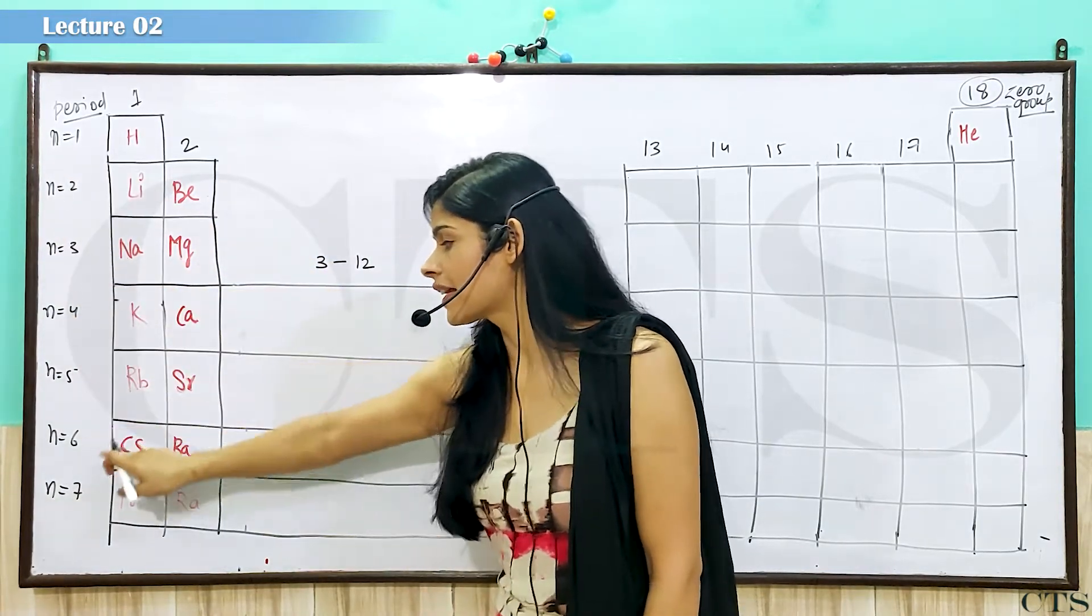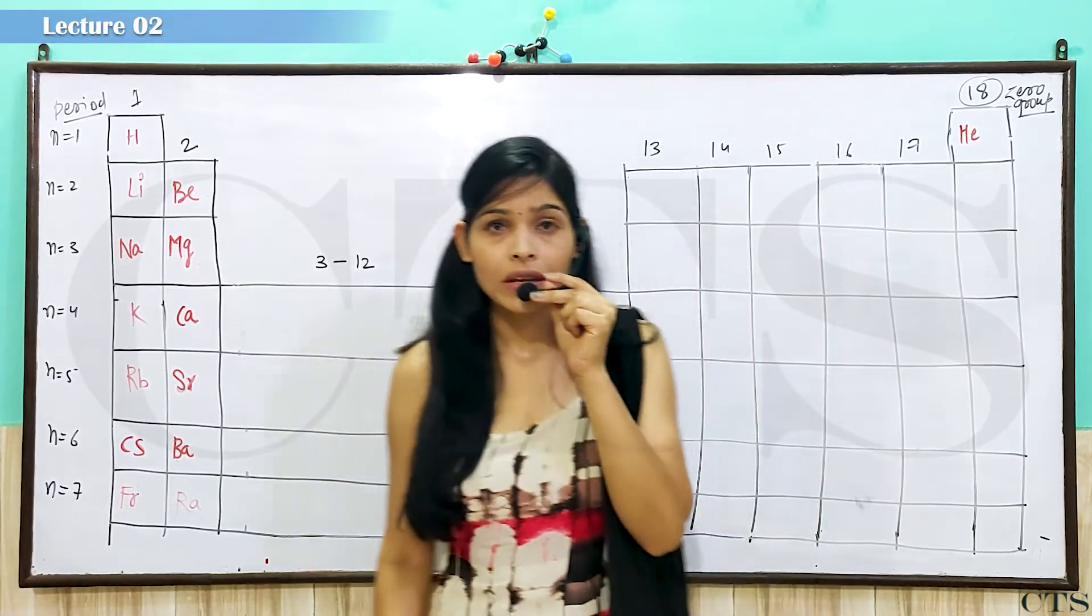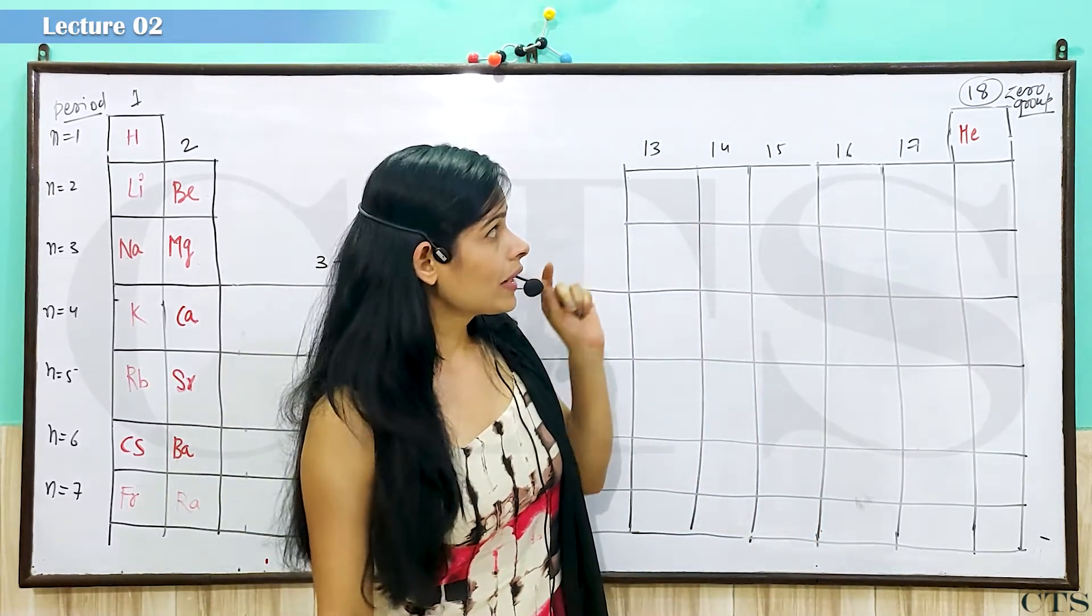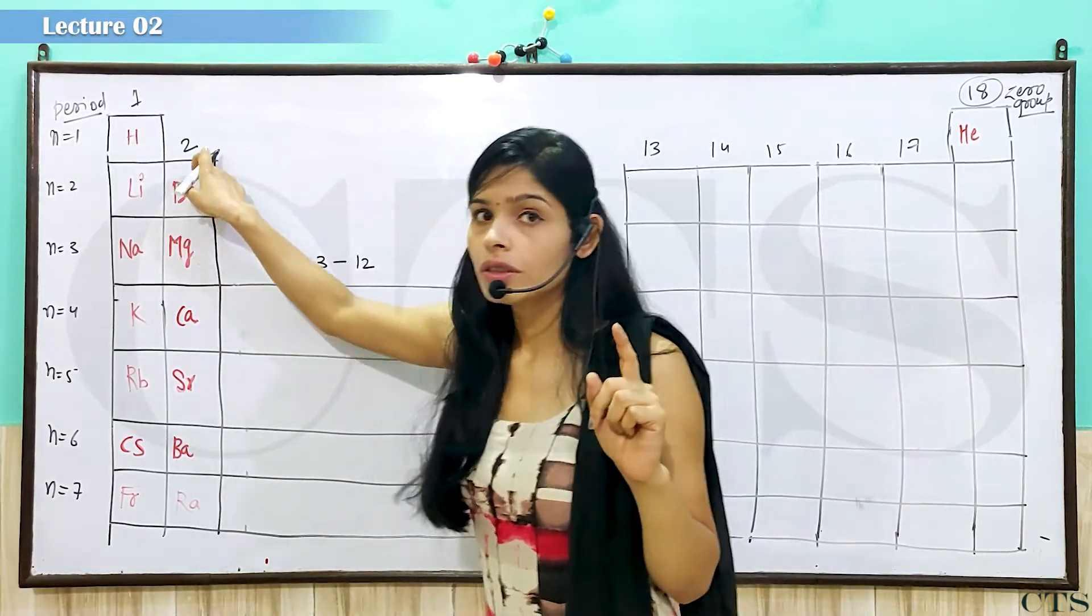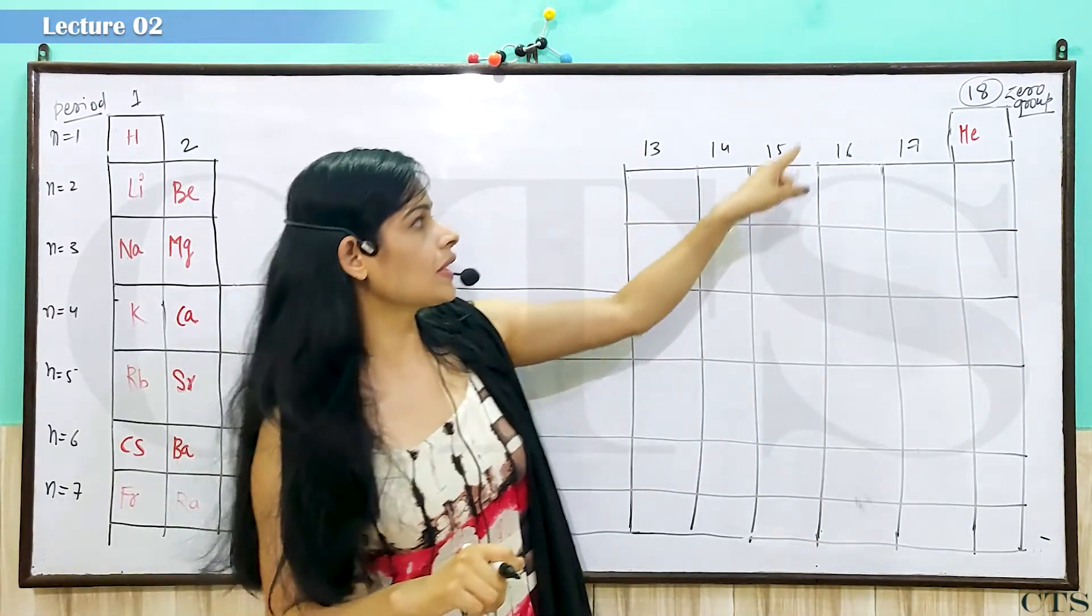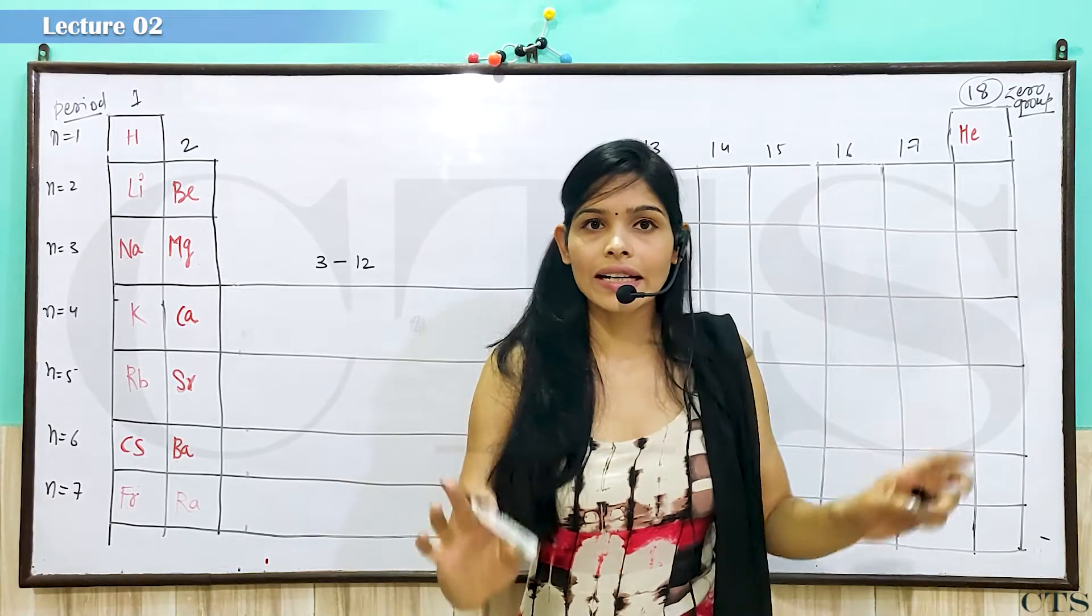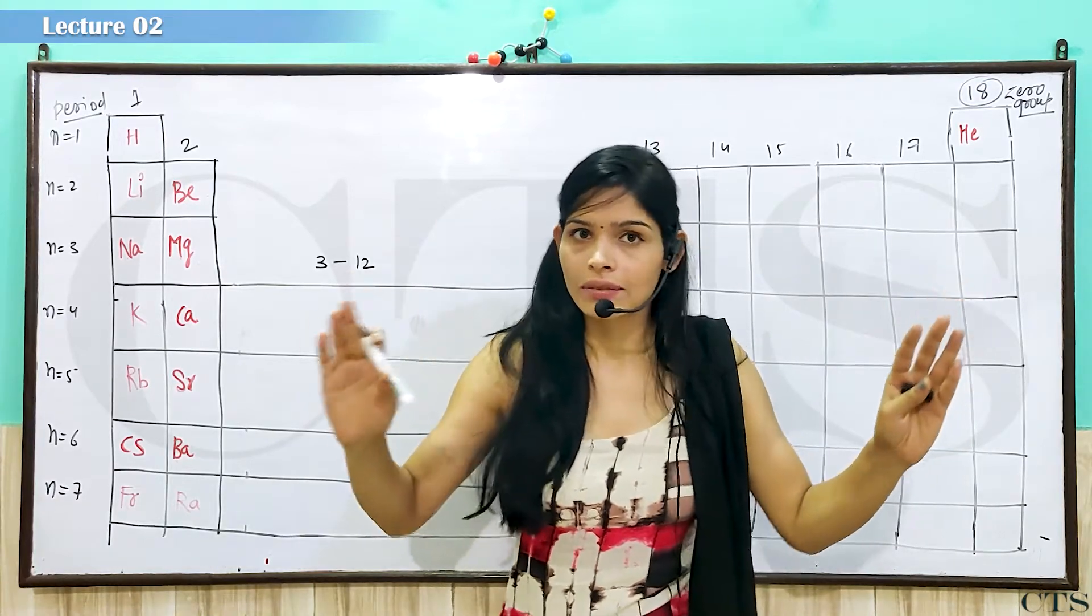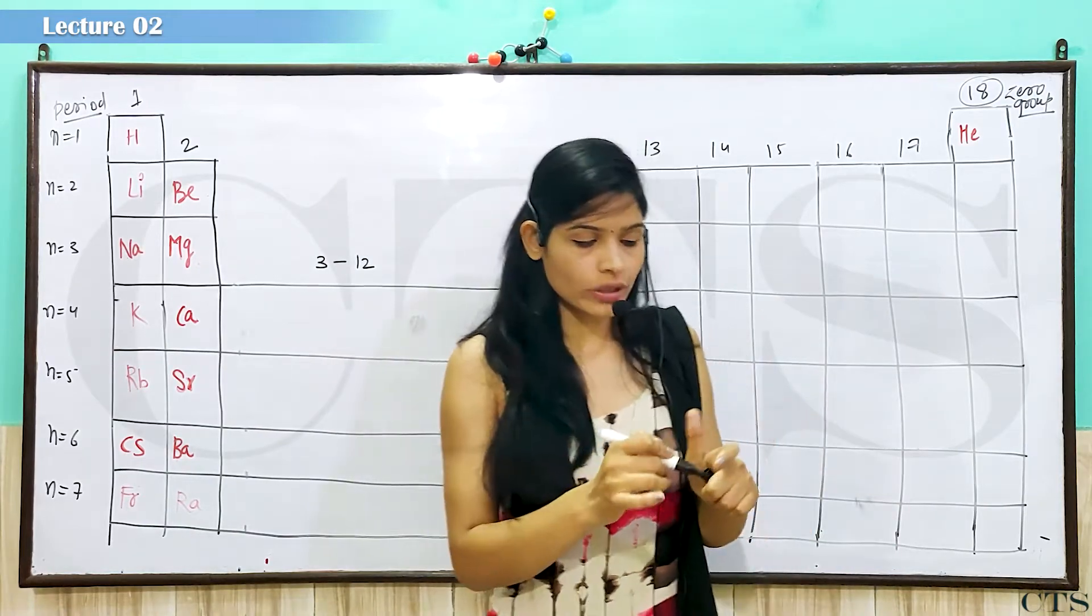Second period, third period, fifth, sixth, seventh, am I clear. Thikhe beta ji, ab dhekhye gha, yahaan par beta ji, columns kya hai, one, two, yahaan three se leke twelve, then thirteen, fourteen, fifteen, sixteen, seventeen, eighteen. Eighteen kiya laga diye, group laga diye, period kitne, seven, eighteen kitne, group, done, good.